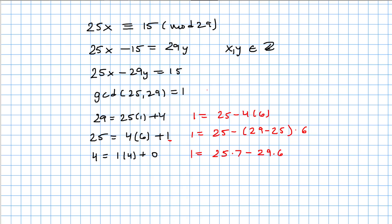So when x equals 7, the 7 represents the multiplicative inverse for this modular arithmetic. Basically, 25 times 7 is congruent to 1 (mod 29). The key is we need to multiply the original equation by 7. So 25 times 7 is 175, giving 175x congruent to 105 (mod 29).